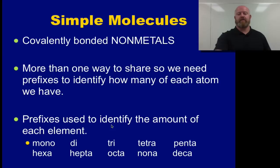Now we have ten prefixes that we're required to use. Our first prefix is mono. Mono stands for one. Our second prefix is di which stands for two, tri which is three, tetra which is four, penta which is five, hexa is six, hepta is seven, octa is eight, nona is nine, and then of course the last one, deca is ten.